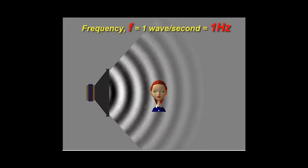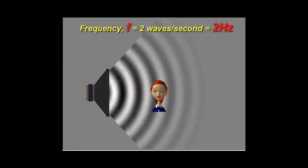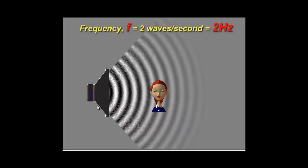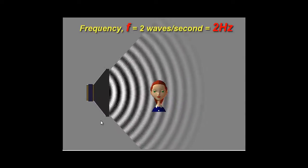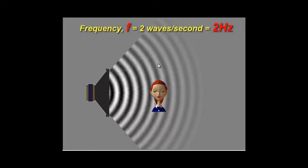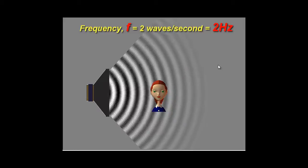Now let's change the frequency and double it. Now we see that the speaker is moving twice as fast, moving in and out at double the rate approximately. So we would say it's creating two waves per second, a frequency of two Hertz.